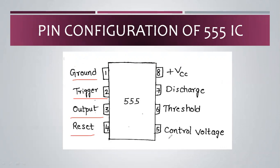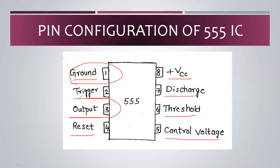The fifth pin is control voltage. The sixth pin is threshold. The seventh pin is discharge. And the eighth pin is plus VCC. The first pin provides ground connection, and the third pin gives output oscillations. The eighth pin is the power supply — plus VCC.